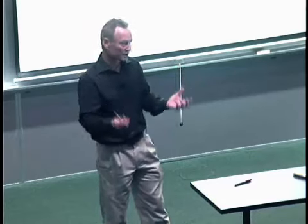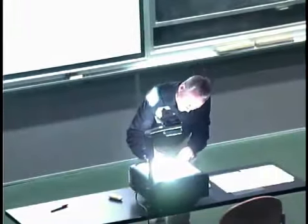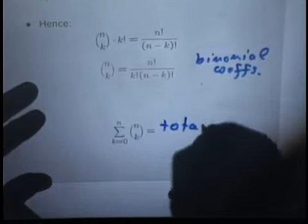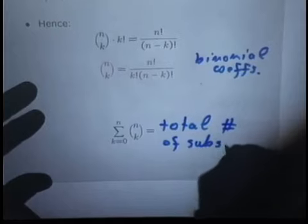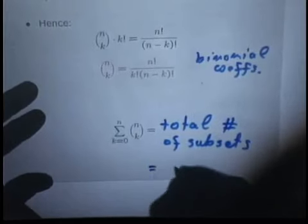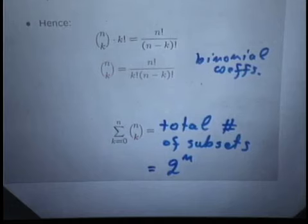We've counted the total number of subsets. We've counted the number of subsets of size k. We've considered all possible sizes k. The overall count is going to be the total number of subsets. And we know what this is.